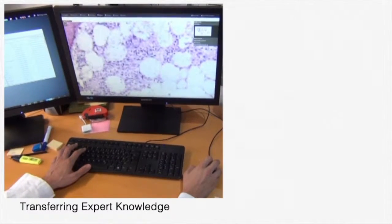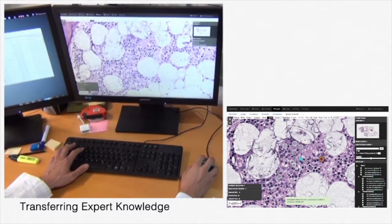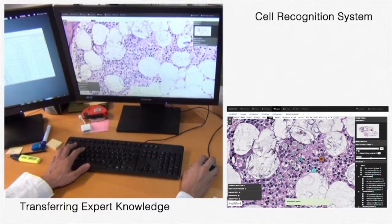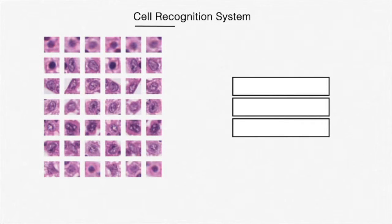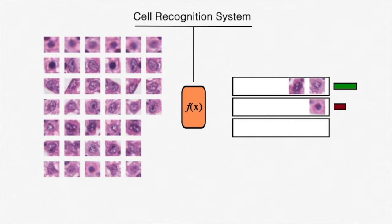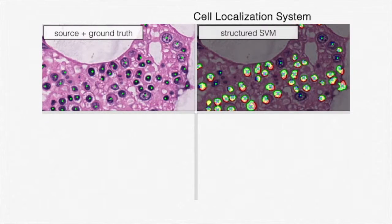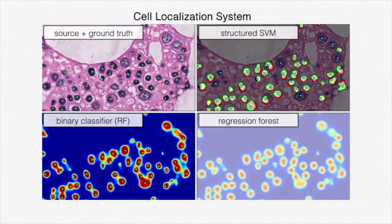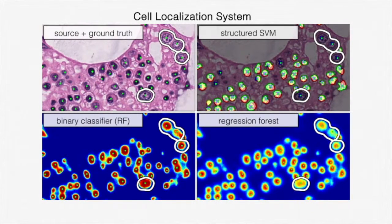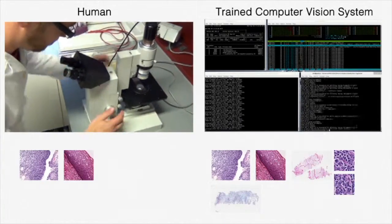The key idea is to transfer knowledge and experience of experts in biology and medicine into our systems by letting them learn from examples. For instance, a cell recognition system learns how cells of different types look, such that the type of a new cell can also be predicted. In another application, the algorithm learns the local image content of and around objects of interest to detect them in new images. Once our systems are properly trained, they save a lot of time and increase the diagnostic quality.